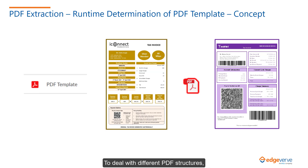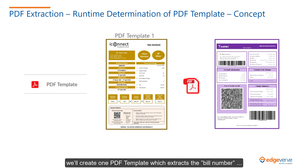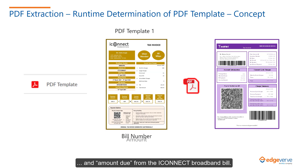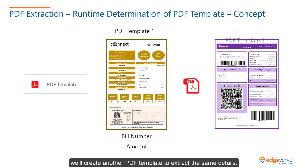To deal with different PDF structures, we will create one PDF template which extracts the bill number and amount due from the iConnect broadband bill. Similarly, for the Tectel broadband bill, we will create another PDF template to extract the same details.